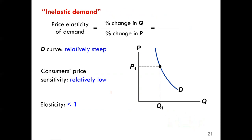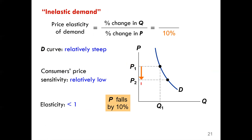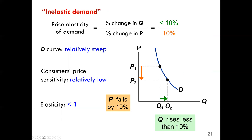The second curve is inelastic demand. This demand curve is relatively steep, and consumer price sensitivity is relatively low — the elasticity is less than one. For example, if price drops by 10 percent, quantity rises by less than 10 percent, giving a price elasticity of less than one.